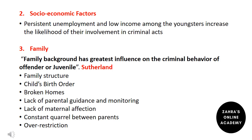Family issues are another major factor. First, family structure: large families may fail to give each child the needed attention, leading to antisocial behavior. Second, birth order matters — an intermediate child who has both older and younger siblings may lack the attention given to the others, creating a tendency to incline toward delinquent behavior.